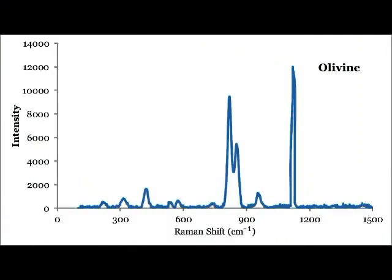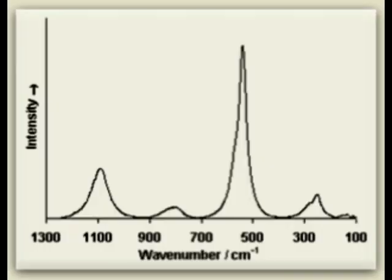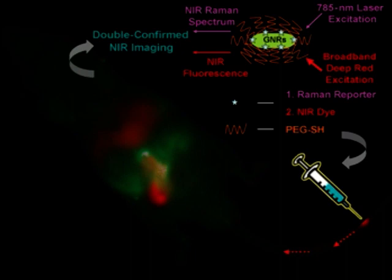Raman spectroscopy is used in many varied fields — in fact, any application where non-destructive microscopic chemical analysis is required. The main applications include compound distribution in tablets, blend uniformity, and informing the pattern of chemicals. Also, gemstone and mineral identification, fluid inclusion, mineral and phase distribution in rock sections, phase transition, and mineral behavior under extreme conditions.